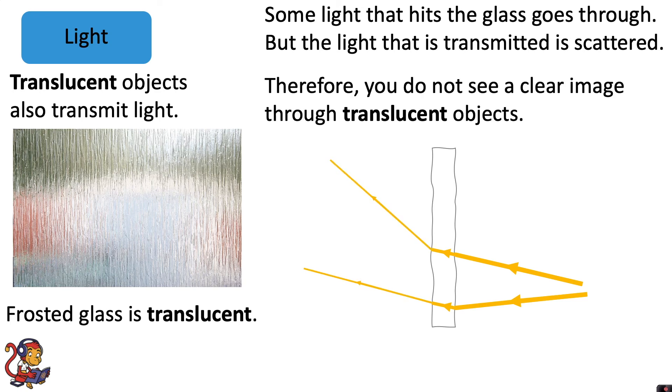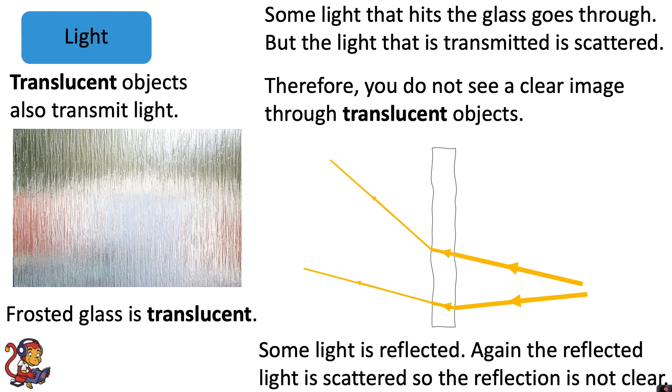Therefore, you do not see a clear image through translucent objects. Some light is reflected. The reflected light is also scattered, so the reflection is not clear.